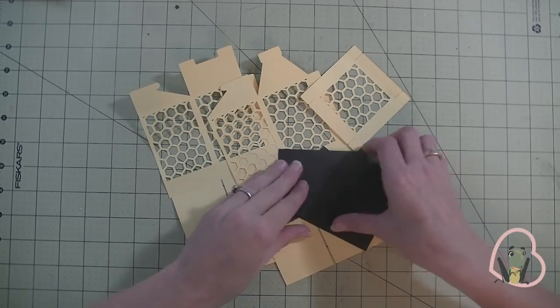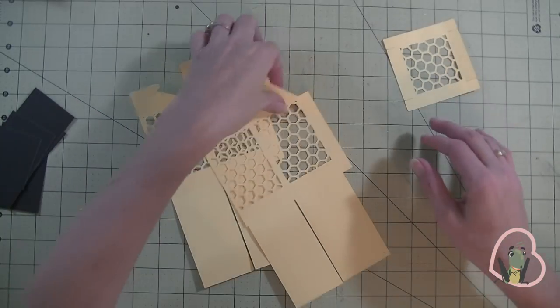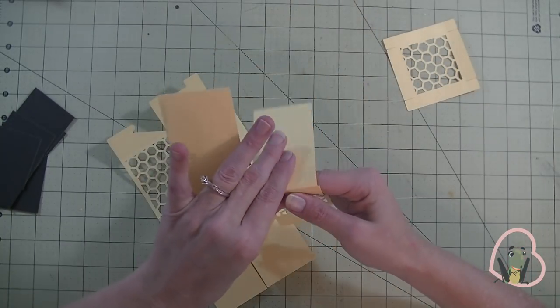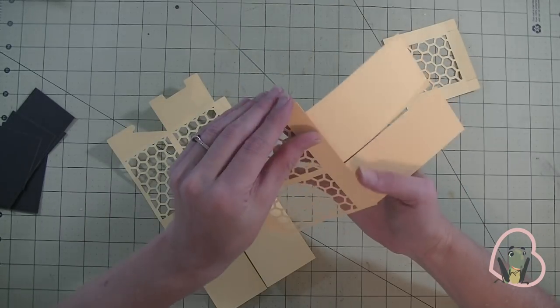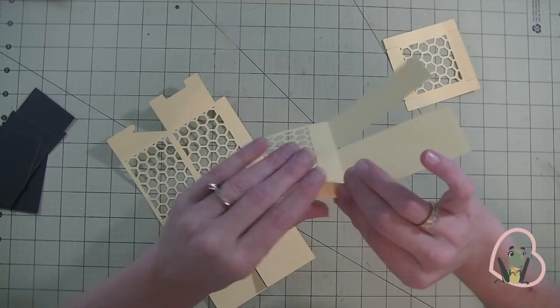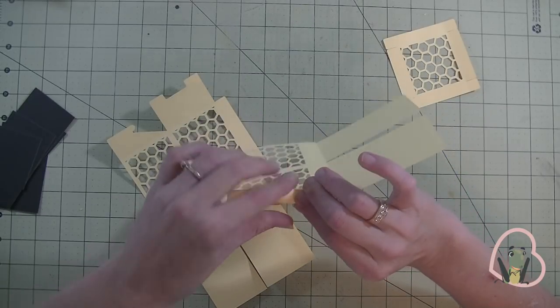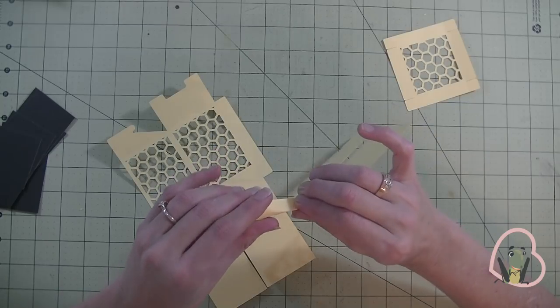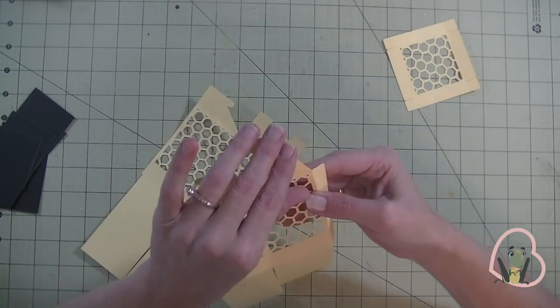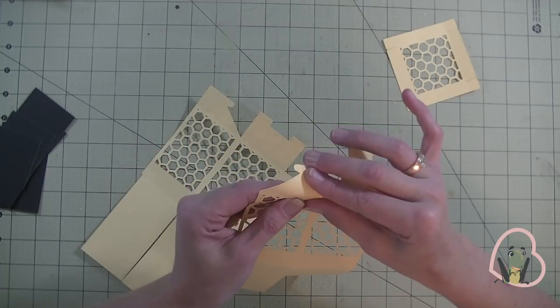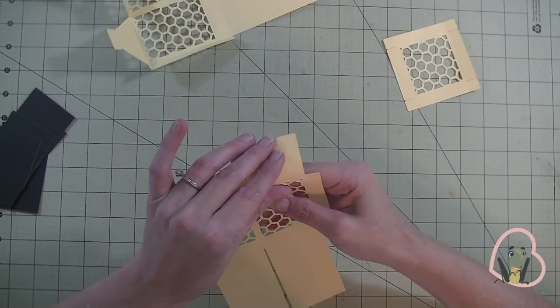Hey guys, we are back. We have all of our pieces cut out. I am first going to go ahead and crease on all of the score marks just to kind of get them started. Now you have to be careful on the one on the side because it is rather close to the honeycomb or the cut out piece. Just kind of work your way through it, just pinching it. Do the one over here at the bottom, then this one here. And we will set that aside and work on this one as well.